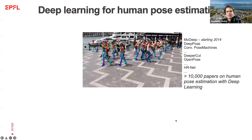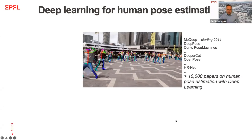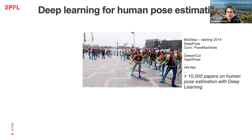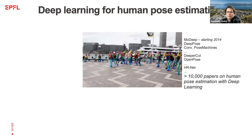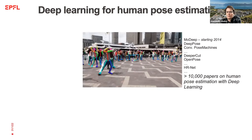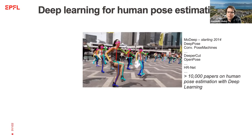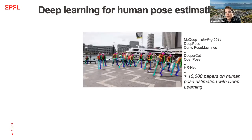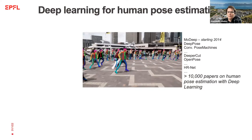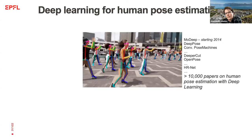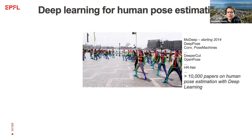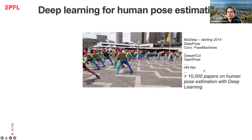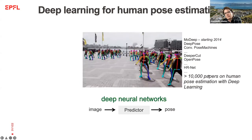As you probably all know, deep learning has greatly advanced the problem of human pose estimation — namely the problem of, given a video of humans, estimating the pose of the different individuals in the scene. What you see here is several people dancing, and the output of a particular algorithm overlaid. This algorithm detects the location of the different body parts, links them correctly to the individual, and therefore performs what is called pose estimation.